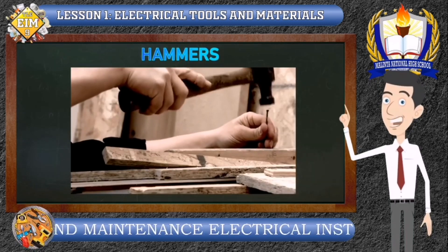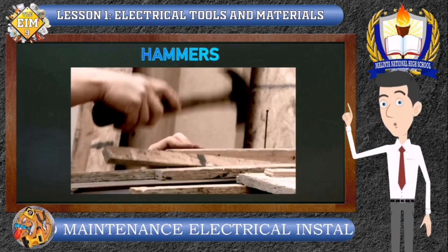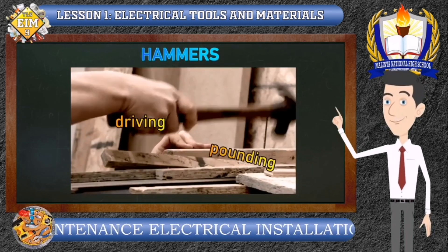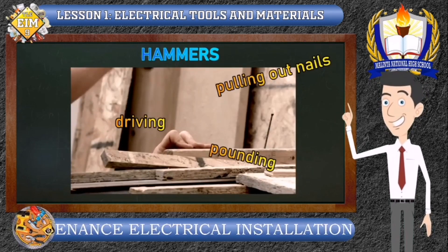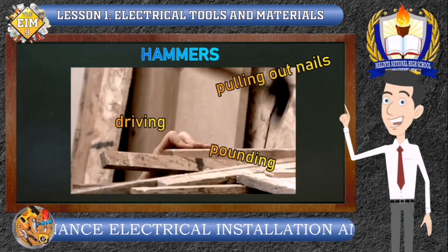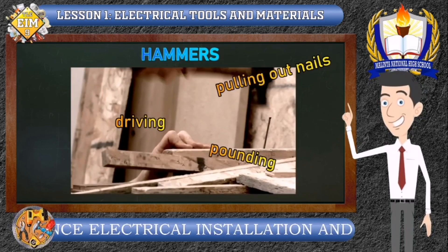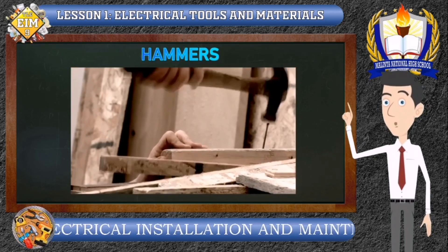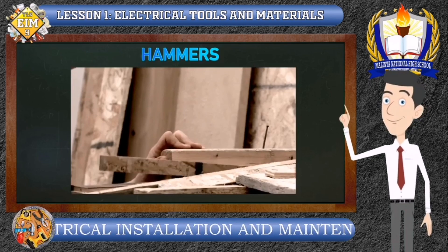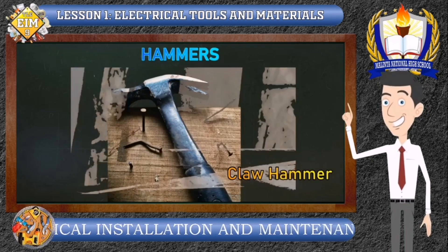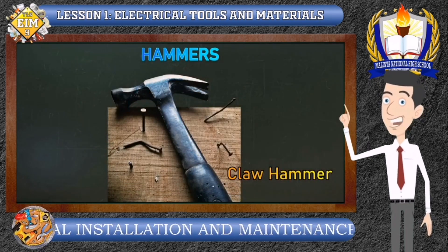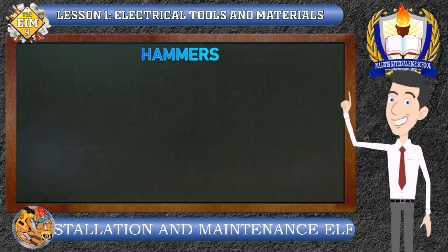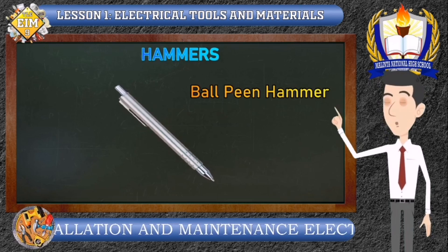Number 2: Hammers. These are tools used in driving, pounding, and pulling out nails. They are made of hard steel, wood, plastic, or rubber. Types of hammer are: claw hammer, rubber mallet, and ball pin hammer.